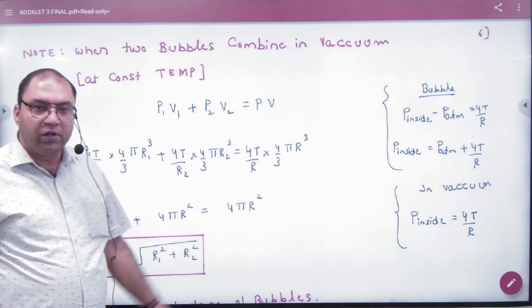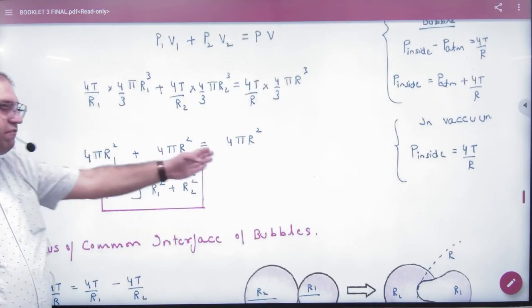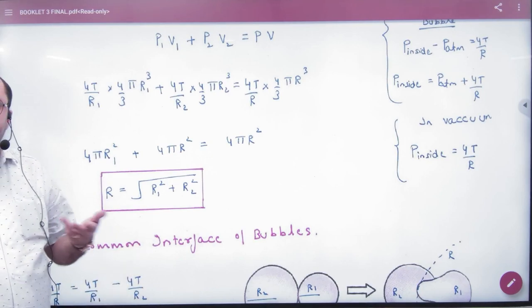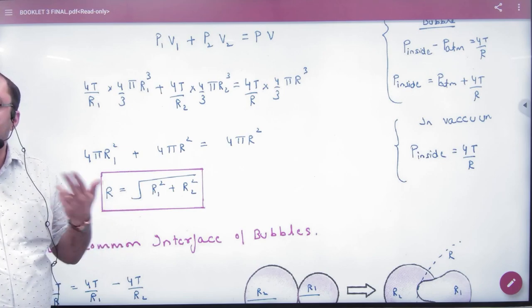then its volume - after all terms cancel, after 4π cancels, the answer comes out. The shortcut is that the new radius R equals the square root of R1 squared plus R2 squared.